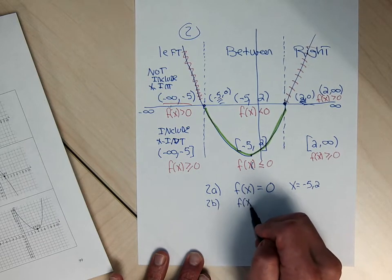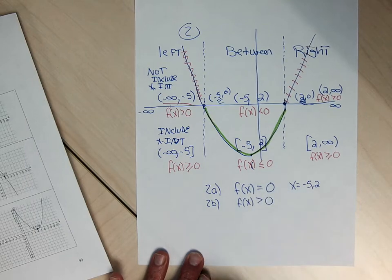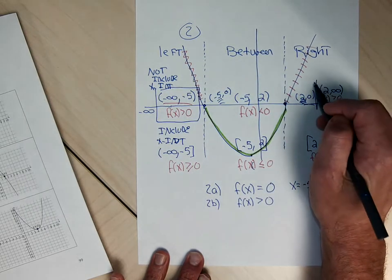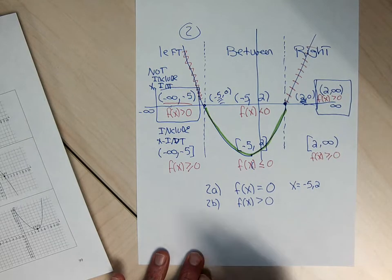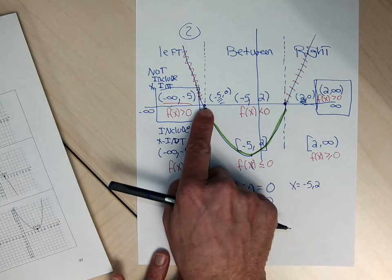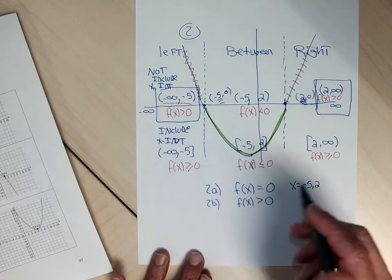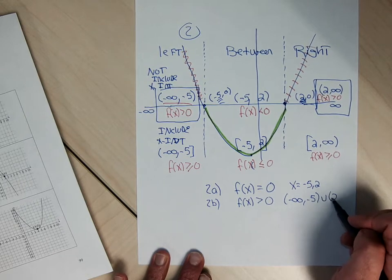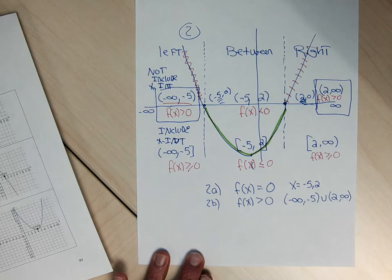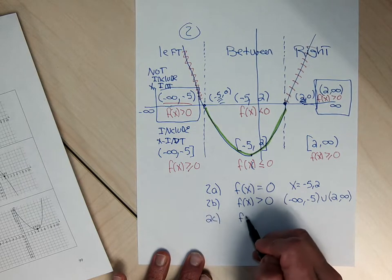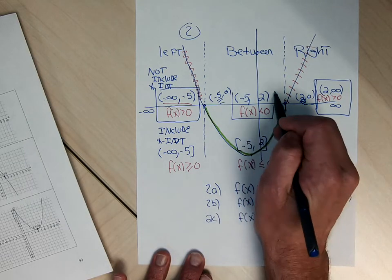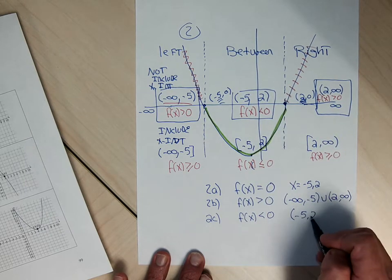Part 2b asks to find the intervals where f(x) is greater than 0 but not equal to 0. Looking at the template, the left and right outer regions — where the graph is above the x-axis and not including the x-intercepts — correspond to that. So the answer is the interval from negative infinity to negative 5, union the interval from 2 to infinity. Part 2c wants where y's are negative but not equal to 0 — that's the region between negative 5 and 2, double round bracket.